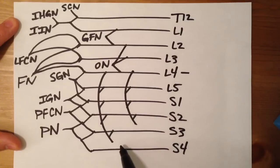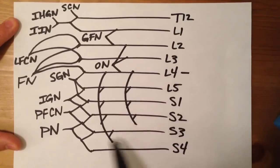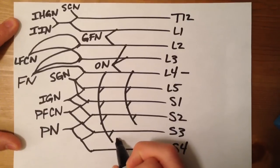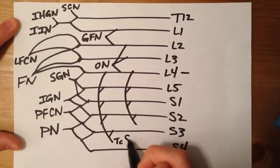This longer branch right here, it's going to be one of your sciatic branches. But this one, from L4 to S3, is going to be your tibial component of the sciatic nerve.